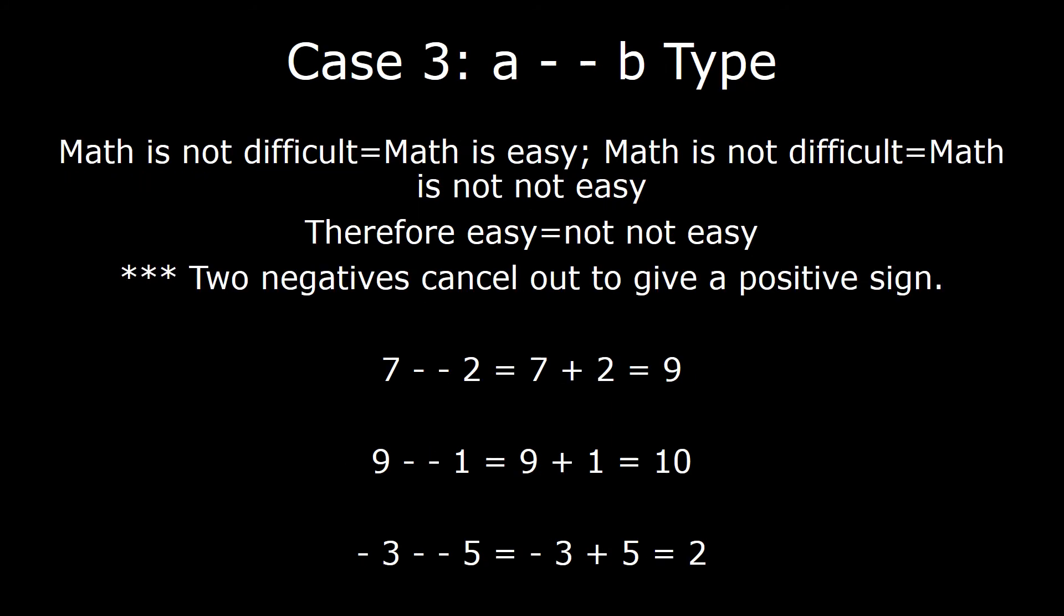Case 3. On to the third and final set of problems for this lesson. What if you have two negative signs adjacent to each other, a double negative as we call it? 7 minus minus 2. I'm asking you to subtract a negative number from 7. What would you do in the English language? If I told you math is not difficult and asked you to explain the meaning of that sentence, you would say that I'm suggesting that math is probably easy. But math is not difficult can be rewritten to replace the word difficult with not easy as math is not not easy equals math is not difficult equals math is easy.